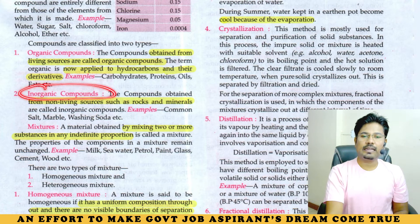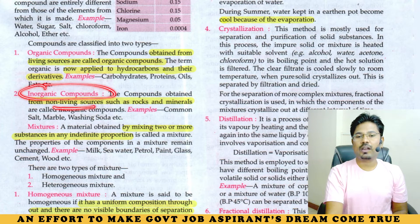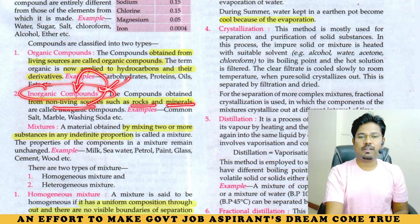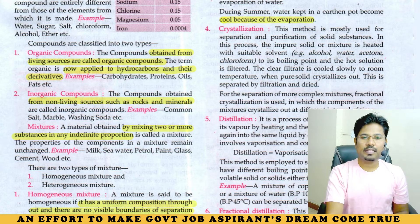Inorganic compounds come from non-living sources. Inorganic sources are rocks and minerals from which inorganic compounds are formed. Common salt, marble, washing soda, etc. are examples of inorganic compounds.